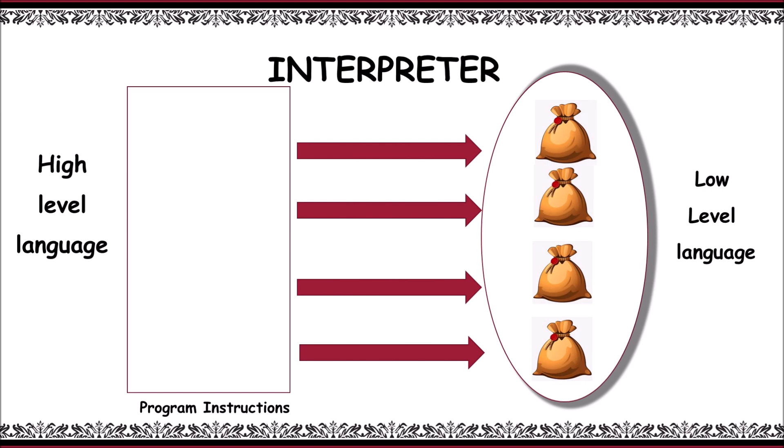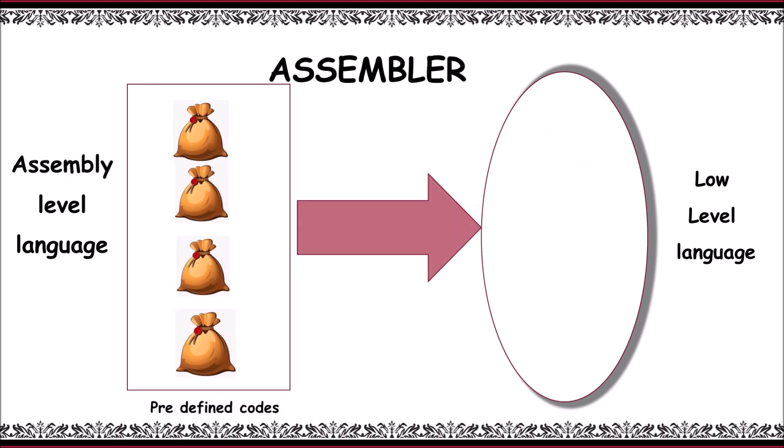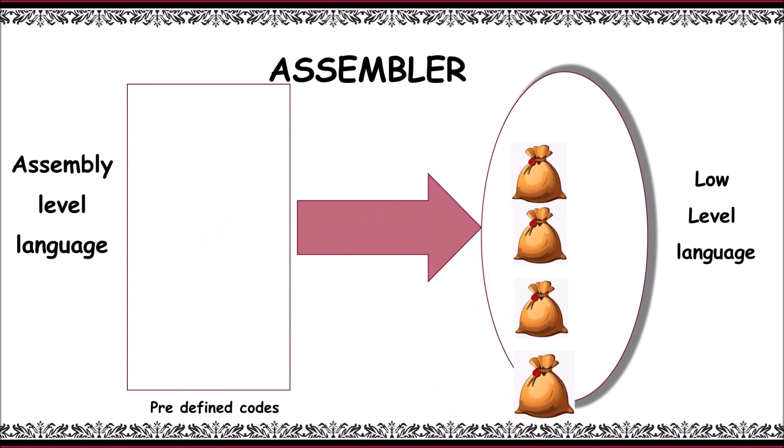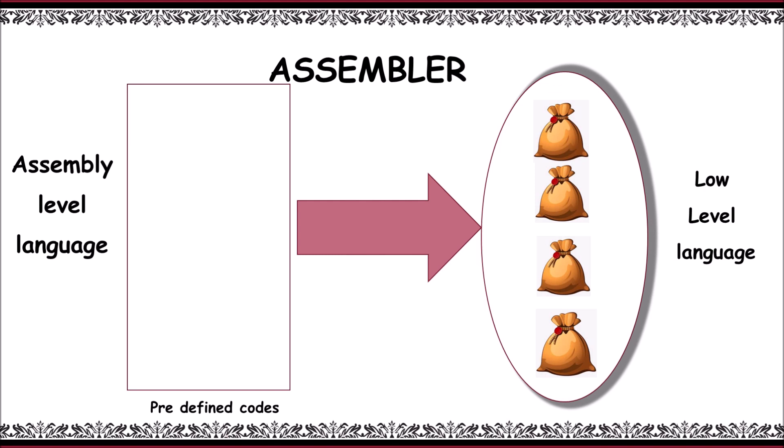The last one is the assembler. An assembler contains certain predefined codes. These predefined codes are translated all at once. An assembler translates a program written in assembly level language into machine language, and it is effectively called a compiler for the assembly level language.